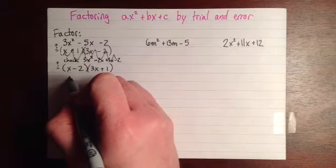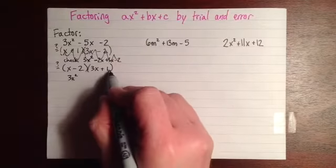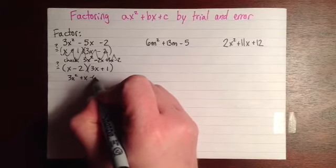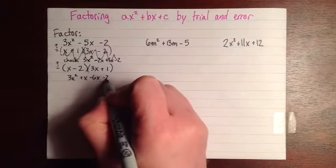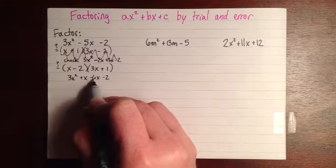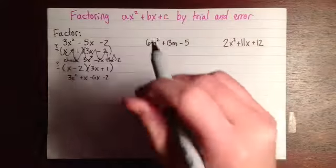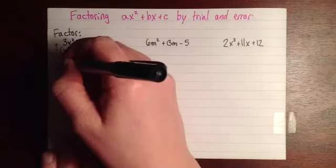So we get 3x squared, and then plus x minus 6x minus 2. And yeah, that's right, because 3x squared, and then this gives us minus 5x minus 2. So this one is actually right.